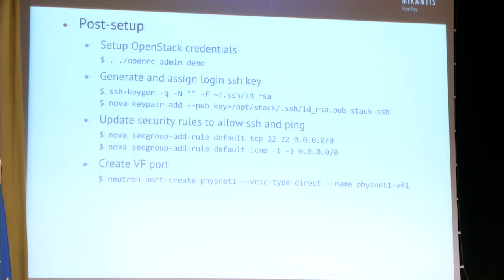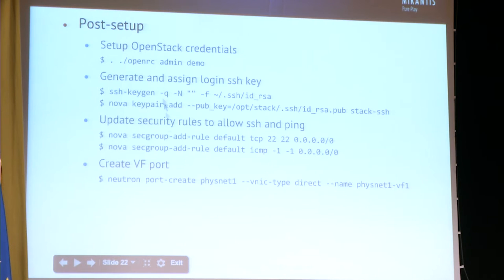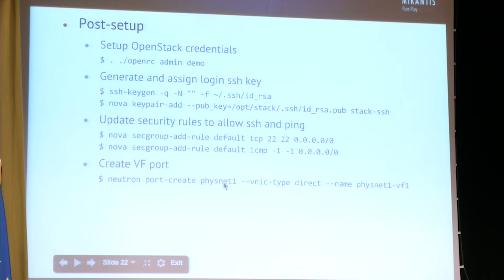We also have to specify via a whitelist what devices are supported. We define an alias for use in configurations later, and the whitelist specifies the PF, telling it to pull in all of the VFs. After that there's some standard follow-up: enable SSH into the guests, enable ping, create the port, and go through actually creating the VFs one port at a time. One thing we don't have control over is we don't get to specify right now which VF we're pulling in.